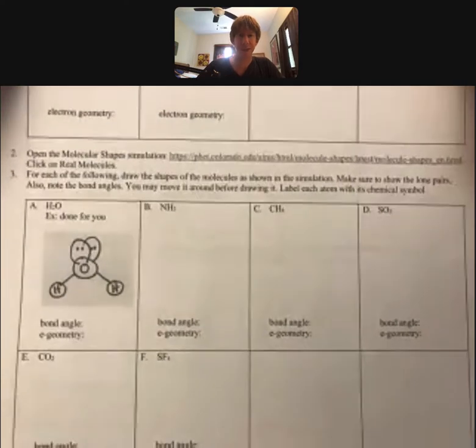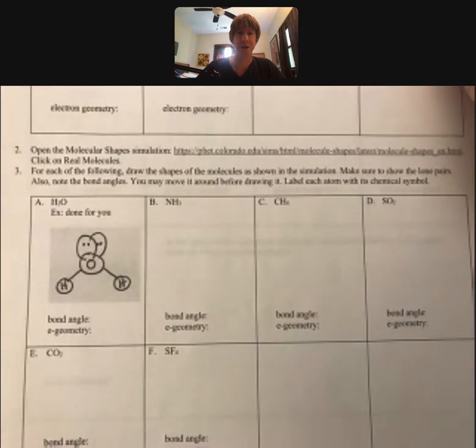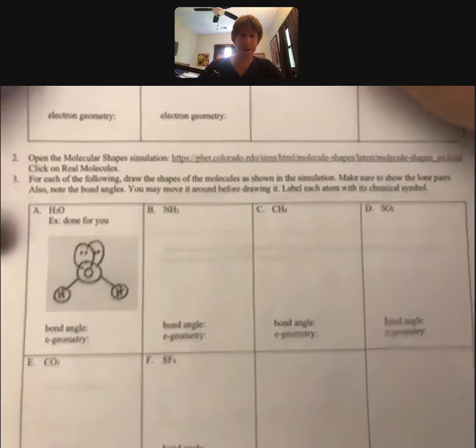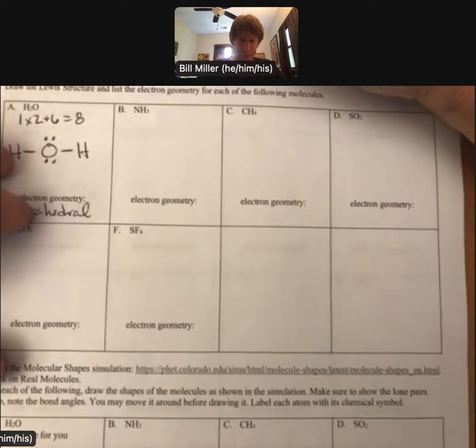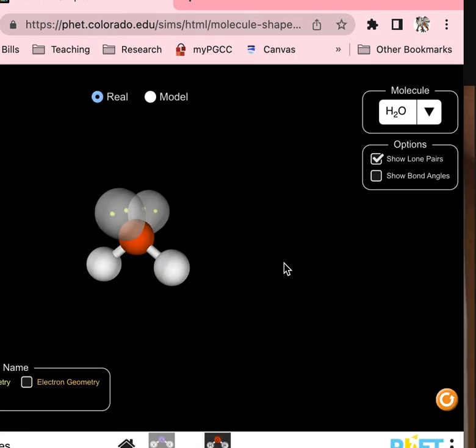Now let's go ahead and talk about numbers two and three. Number two says open the molecular shapes simulation. I've gone ahead and done that right here, and then it says click on real molecules. Yep, there we go.